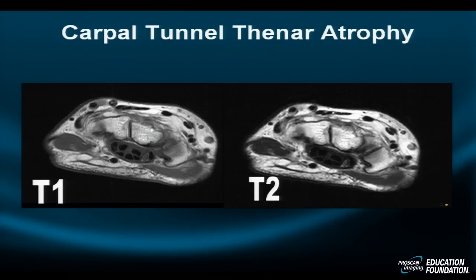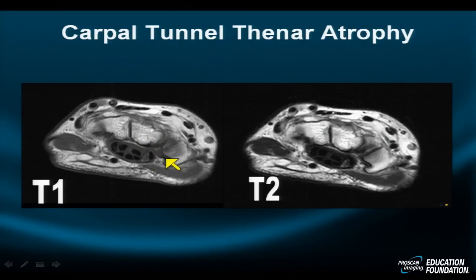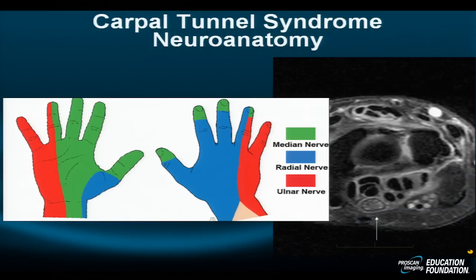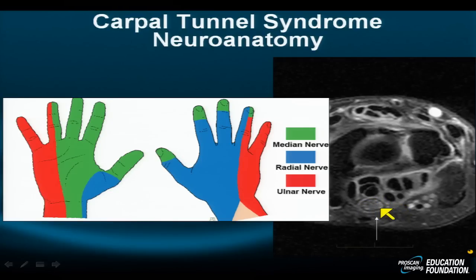In somebody with chronic carpal tunnel syndrome, you may see extreme thenar muscle atrophy with fatty replacement and metamorphosis. This patient also demonstrates the vertical median nerve — located between the flexor indicis and flexor pollicis tendons — with a vertical orientation. On a T2 spin-echo image, which is mildly water-weighted, the nerve shows gray or intermediate signal intensity, which is normal. In clinically symptomatic CTS, you may see bowing or palmar displacement of the flexor retinaculum, and the nerve may appear slightly enlarged.